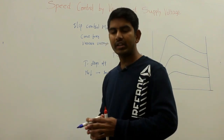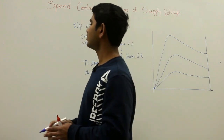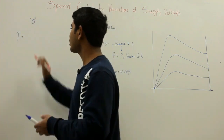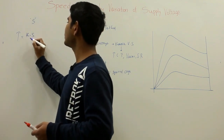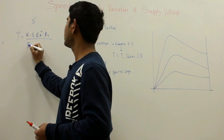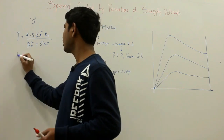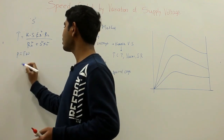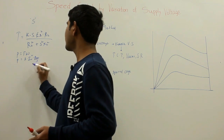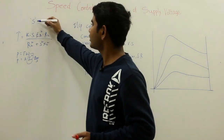Let us consider the torque equation at running conditions for a given slip S. The torque can be given by: T = K · S · E2² · R2 / (R2² + S²·X2²), where K is a constant. This is obtained from power = torque × omega, and power = 3 · I2² · R2/S. By substituting the value of I2, you obtain this torque equation in running condition at a given slip S.